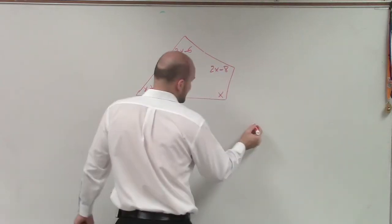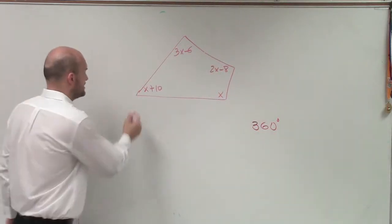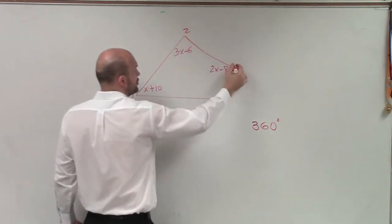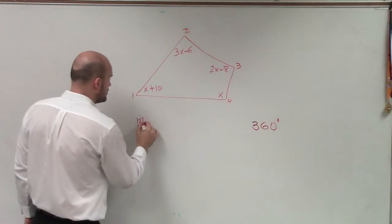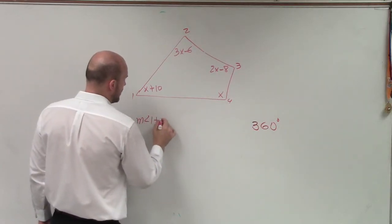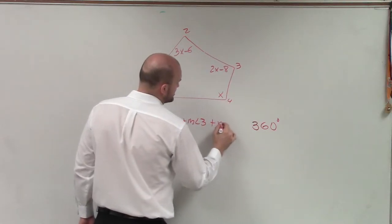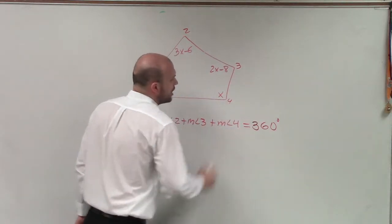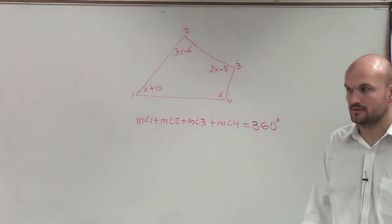So that means all of my angles, let's call this angle one, two, three, and four. The sum of all of my angles, measure of angle one, plus measure of angle two, plus measure of angle three, plus measure of angle four, add them all up, equals 360. Does everybody see that?